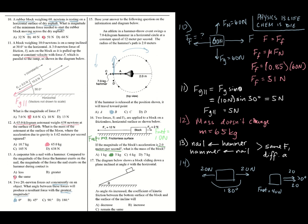Number seventeen: as the angle of an incline increases, what happens to the coefficient of kinetic friction? We need to be careful — when you see 'coefficient,' we're talking about mu. Mu doesn't change unless you change the material. We're only changing the incline, and that has no effect on mu whatsoever. So mu stays the same.